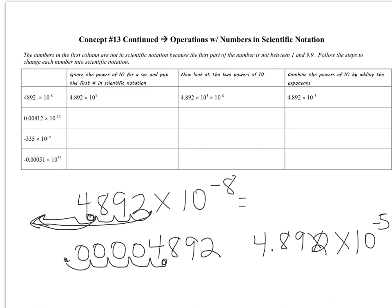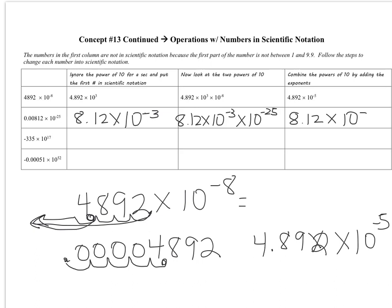For the next example with times 10 to the negative 25th: 0.00812 in scientific notation is 8.12 times 10 to the negative 3rd. Then multiply that by 10 to the negative 25th. Since they have the same base, add the exponents: negative 3 plus negative 25 gives 8.12 times 10 to the negative 28th.